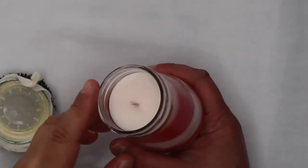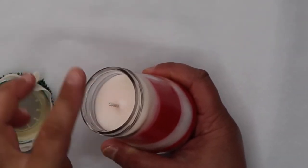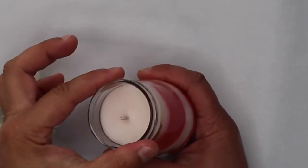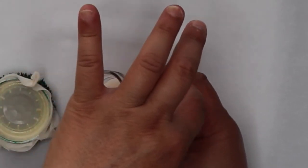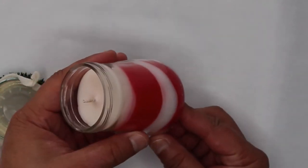For my wick, I'm using an ECO 2 because this is one and a half inch circumference, but it goes down to two inches, so this is the perfect wick that won't burn your jar.